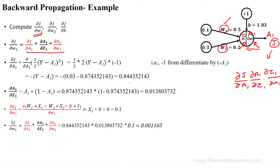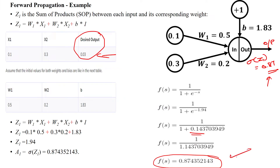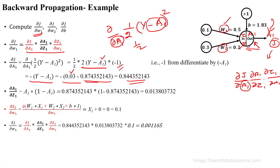When applying the partial derivation with respect to A1, the error function J is (1/2)·(Y − A1)². Differentiating with respect to A1 gives (1/2)·2·(Y − A1)·(−1), which simplifies to −(Y − A1) = A1 − Y. The actual output Y is from the dataset and the predicted output A1 is 0.874. So finally we get ∂J/∂A1 = 0.844.